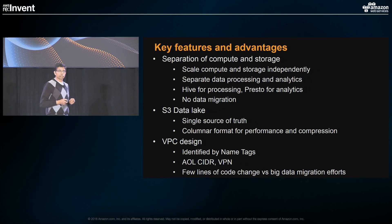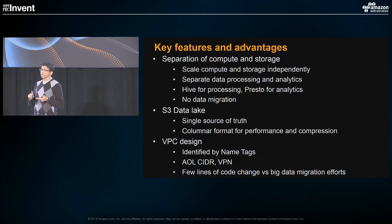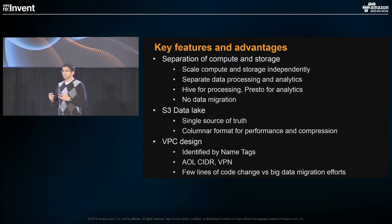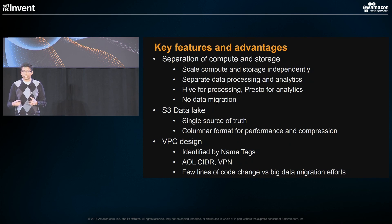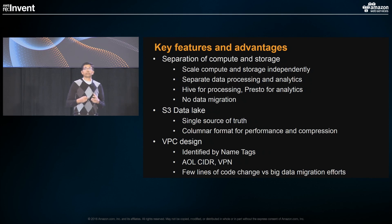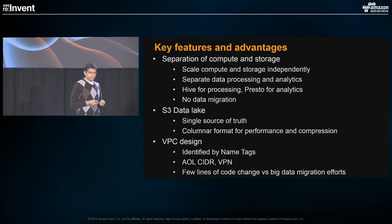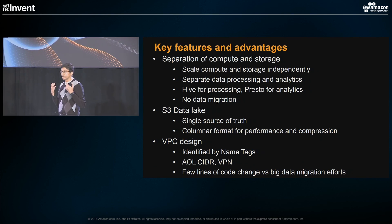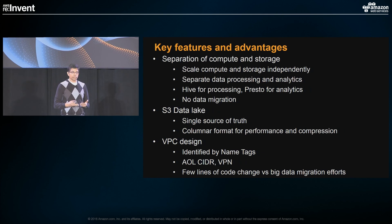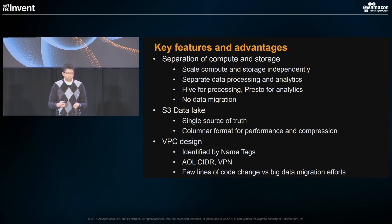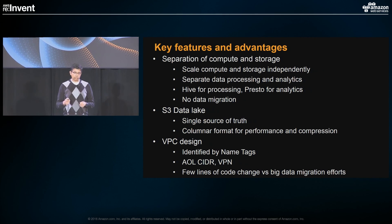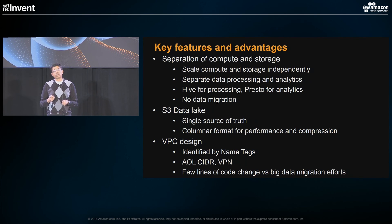We use Parquet columnar format to store all our data, which allows us to compress it and improve performance. We launch all of our clusters in VPCs for our operational security requirements. We are still able to leverage spot instances and all AWS regions by creating VPCs in all those regions while adhering to our IT security policies. With that, I'll turn it over to Gaurav to talk in detail about cost optimization and Lambda orchestration.